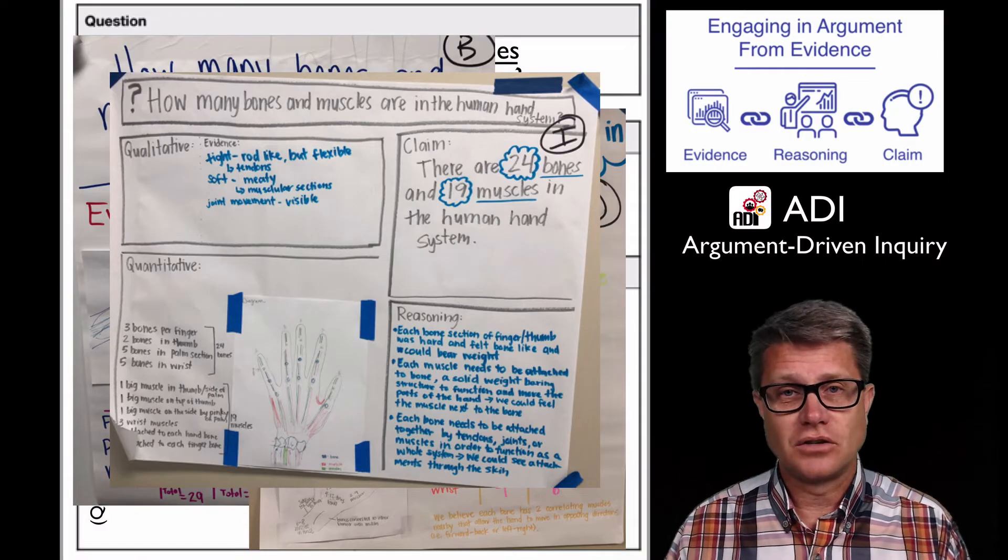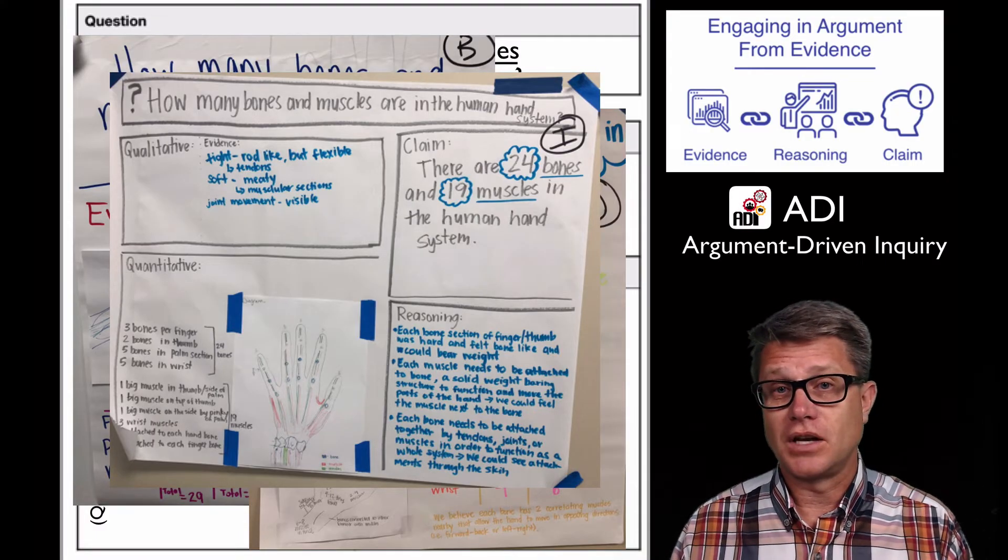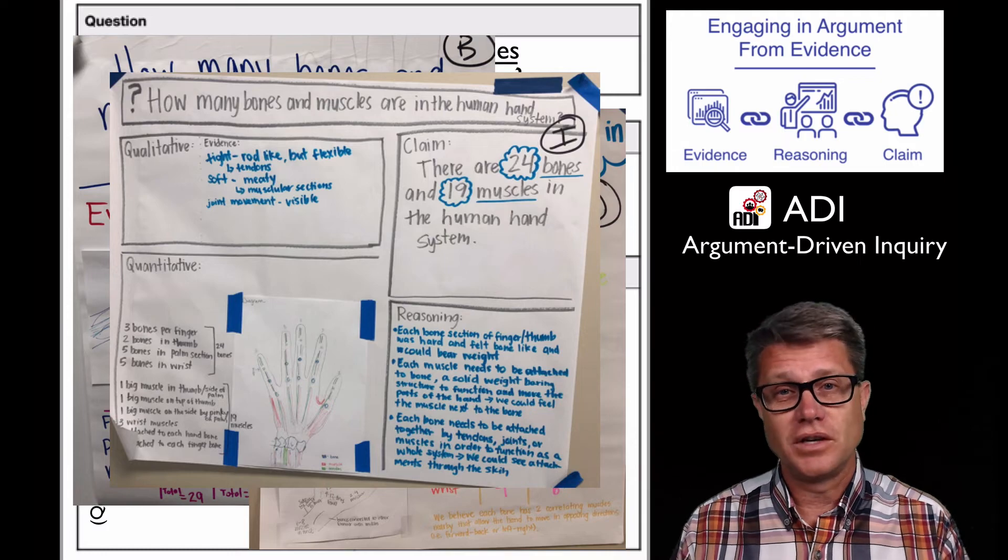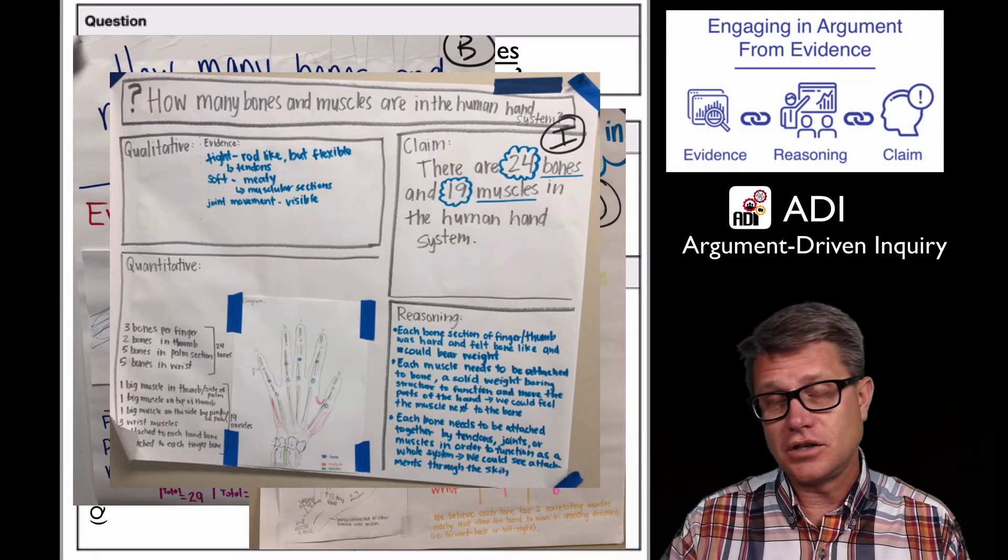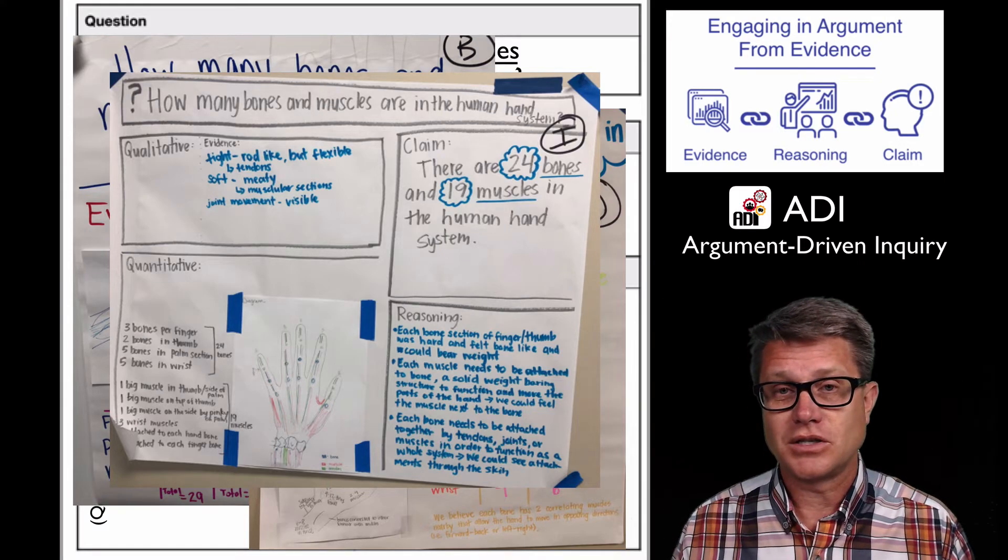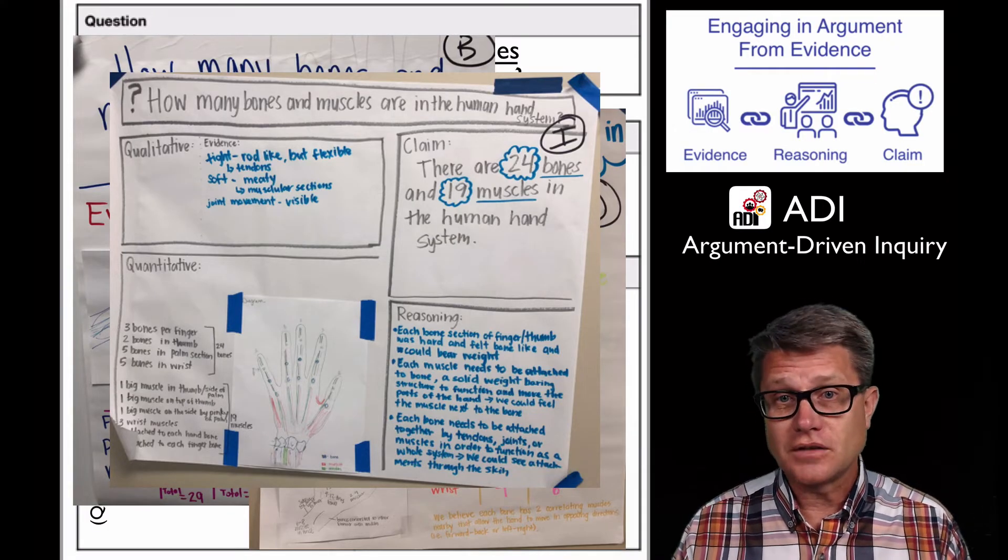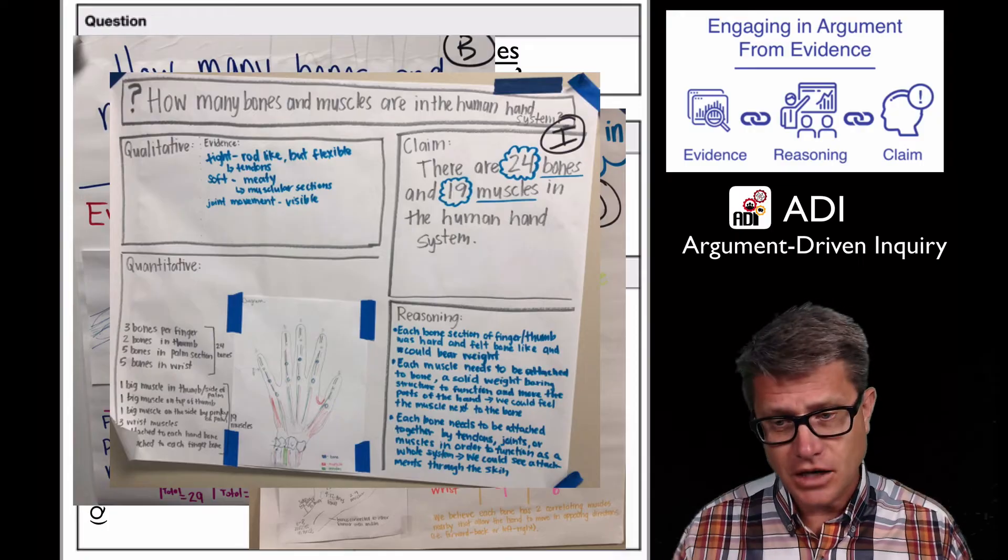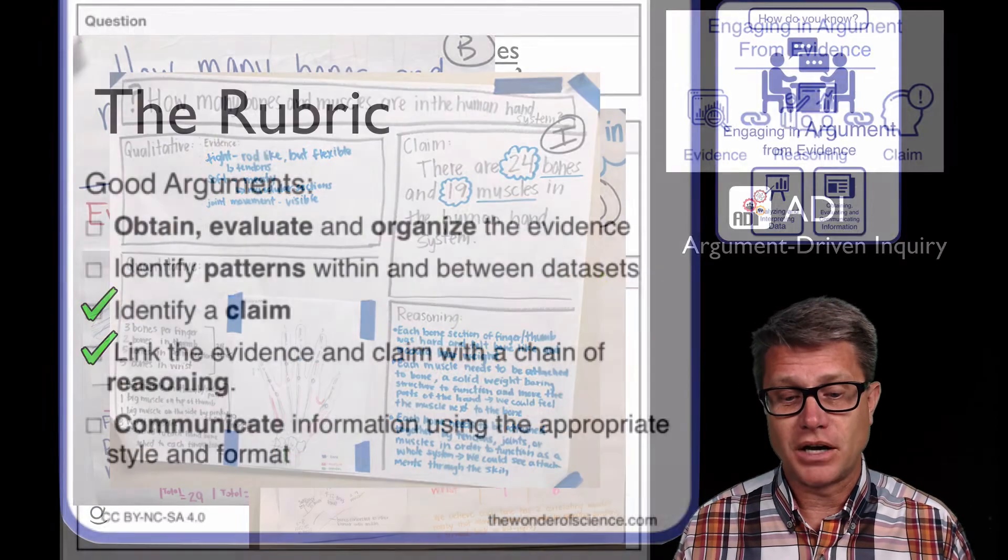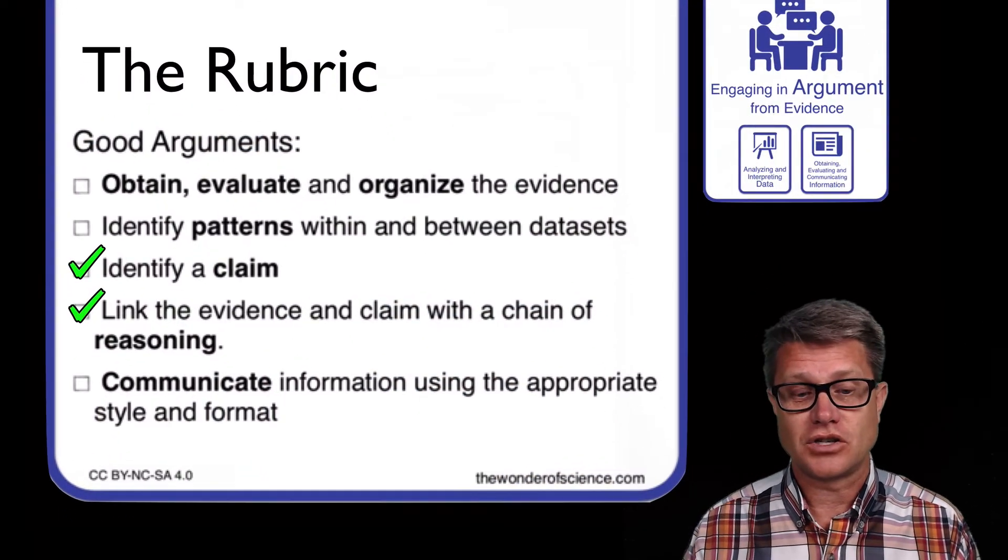Now one of the gold standards on doing argumentation is the argument driven inquiry. They've got a website. They've got some really good peer review sheets that you could go through and look at other people's argumentation. But we then, once we get feedback from other students or the teacher, then we want them to have a chance to gather more evidence and construct a better investigation or a better argumentation over time.